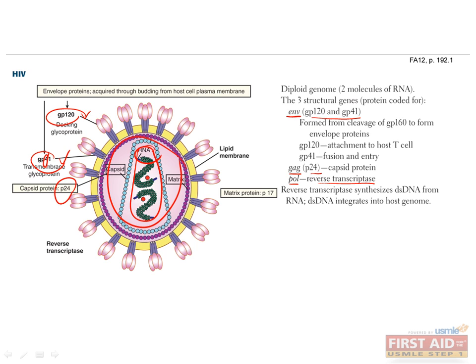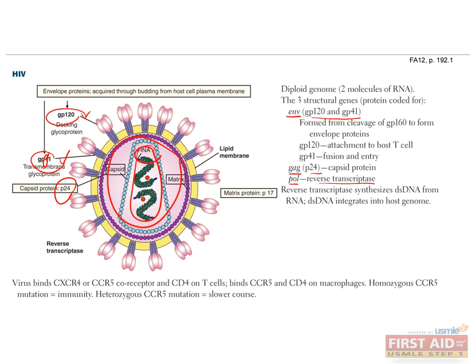HIV primarily infects macrophages and CD4 T cells. Infection and replication within macrophages is key to HIV's ability to spread to other tissues. HIV also uses chemokine co-receptors CXCR4 and CCR5 to enter target cells — CXCR4 to enter T cells, and CCR5 to enter macrophages. A population of patients has inherited a genetic deletion of the CCR5 receptor; homozygous carriers are effectively resistant to HIV infection, while heterozygote carriers experience a slower, milder course.